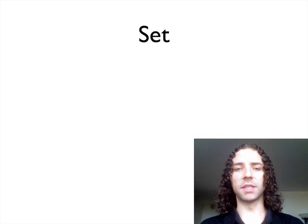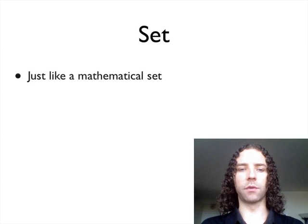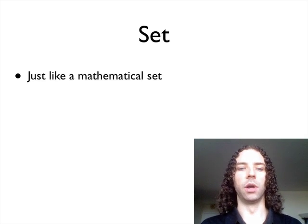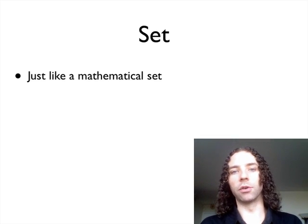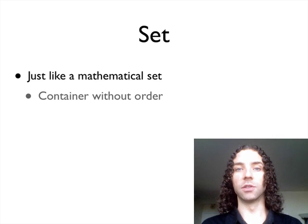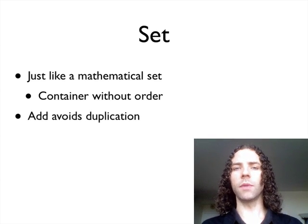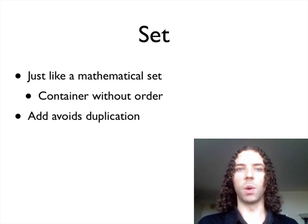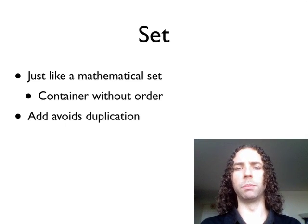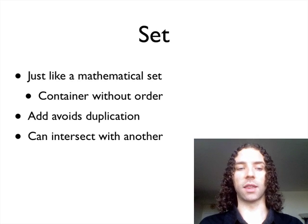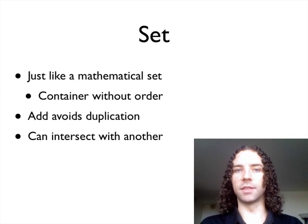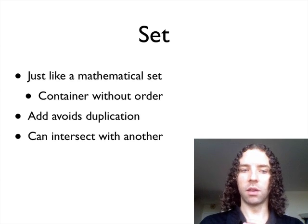One of the most basic abstract data types is a set. This of course comes from basic mathematics — set theory, Venn diagrams, and all that — where you can put things into a set and then intersect that set with others. Basically, it comes down to being a container without order, but it has certain other properties. If you add the number five to a set, it's now the set containing five. You add five again, it's still the set containing five — there are no duplicates within a set. You can intersect sets: a set with two and five intersected with one that has five and six gives you the set that has five.